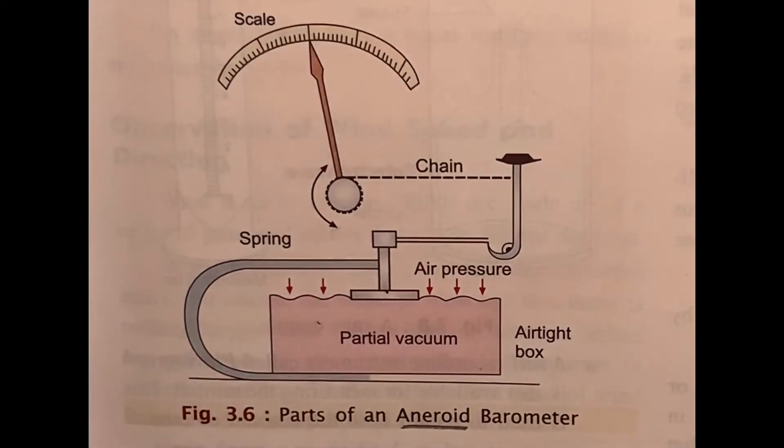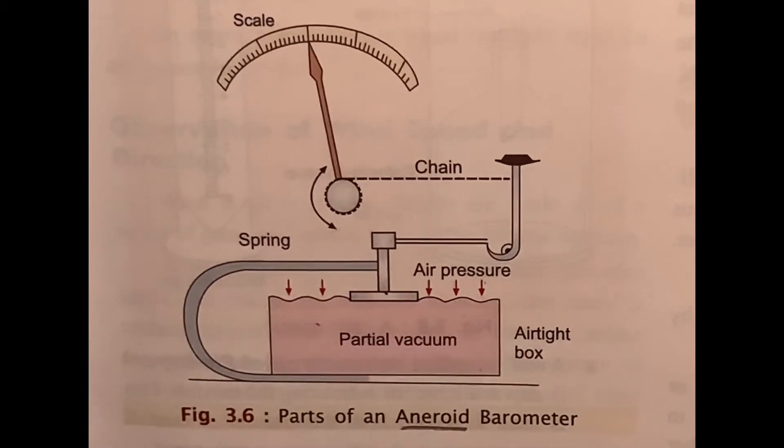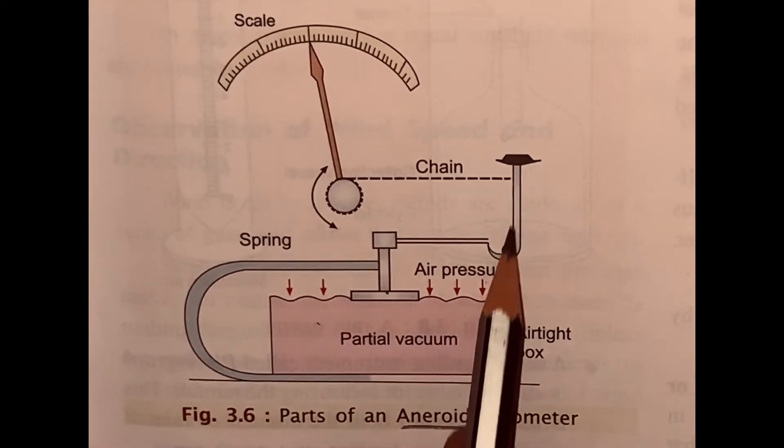Its shape undergoes changes as the outside pressure varies. This box is connected to a needle at one end which shows the barometer readings in millibars on the scale.